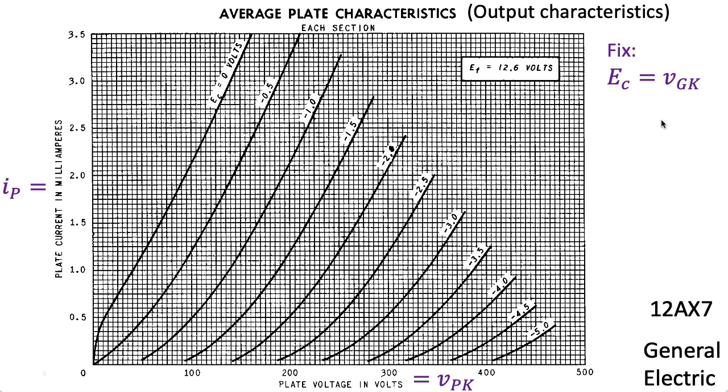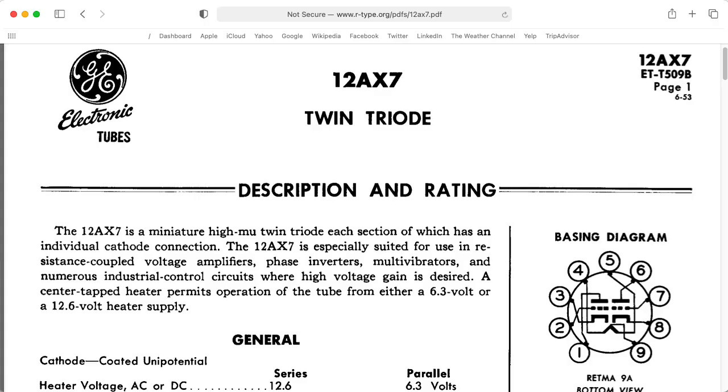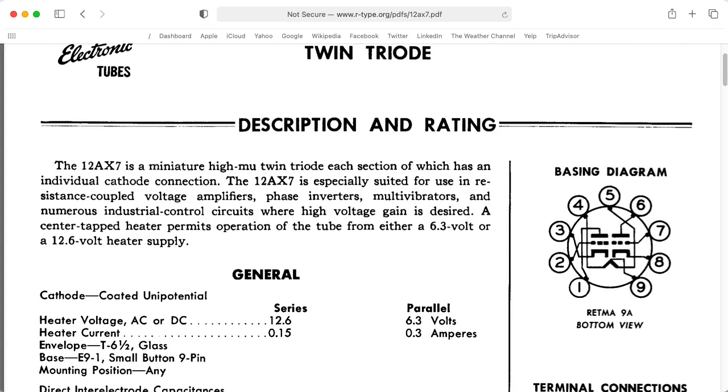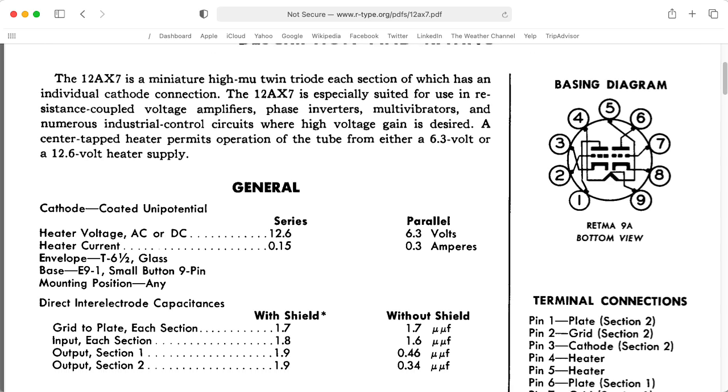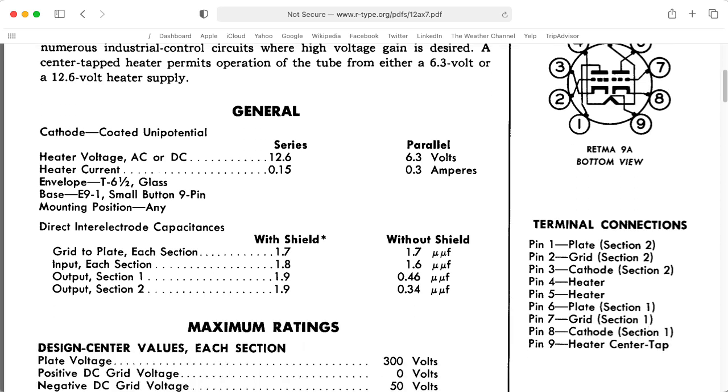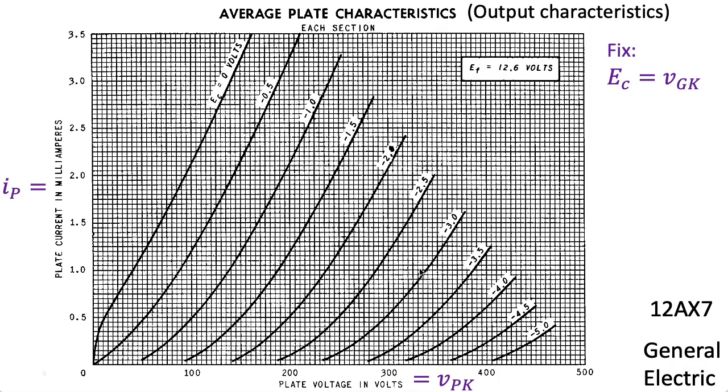Oh, I forgot to mention that this is from the general electric data sheet for the 12AX7. This is an extremely common tube in audio in general, and guitar amplifiers in particular. So we're going to spend a lot of time with these kind of curves over the course of the semester.